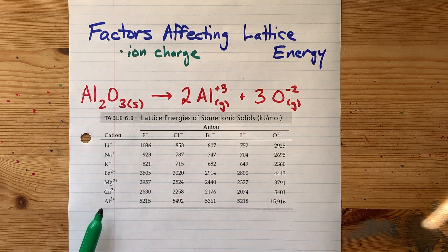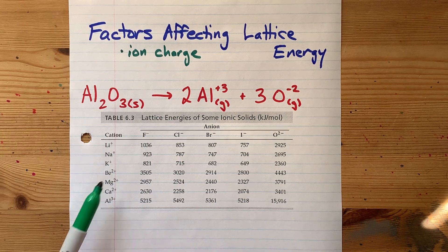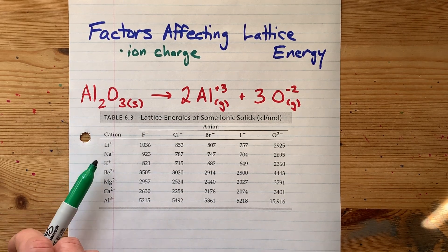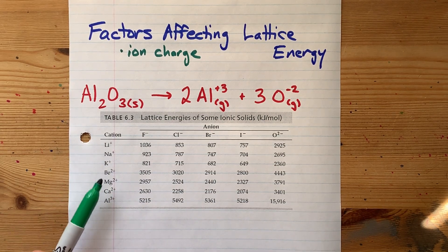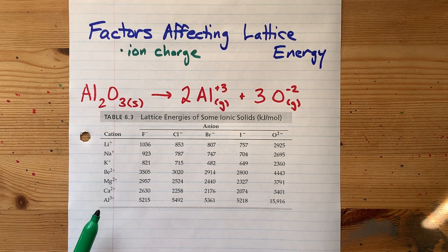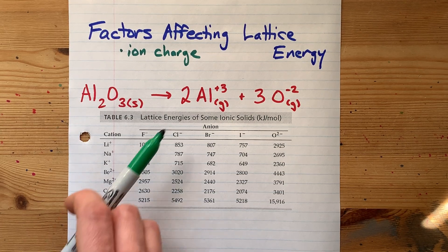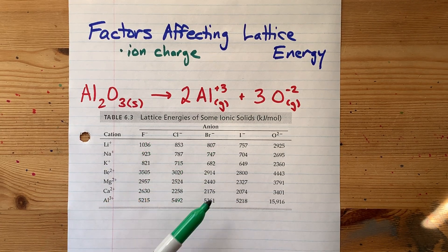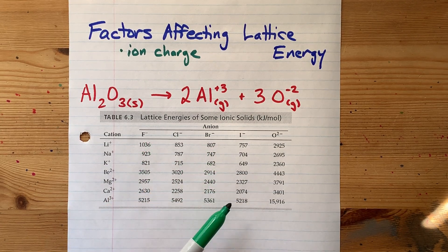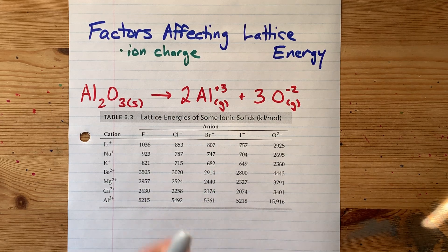You can also see that's the case for cations. We've got some plus 1 ions, some plus 2 ions, and a plus 3 ion. The plus 3 ion always has the highest lattice energy of its column.